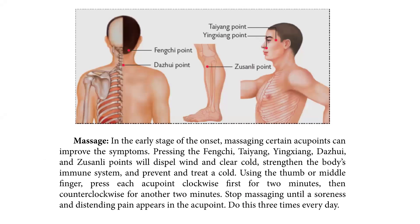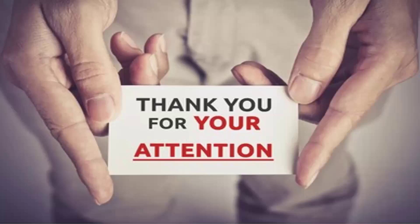Massage: in the early stage of onset, massaging certain acupoints can improve the symptoms. Pressing the fengchi, taiyang, yingxiang, dazhui, and zusanli points will dispel wind and clear cold, strengthen the body's immune system, and prevent and treat a cold. Using the thumb or middle finger, press each acupoint clockwise for 2 minutes, then counterclockwise for another 2 minutes. Stop massaging when a soreness or distending pain appears in the acupoint. Do this 3 times every day. Thank you for your attention.